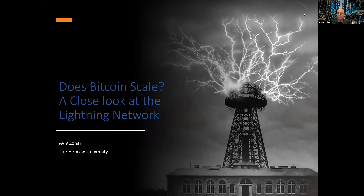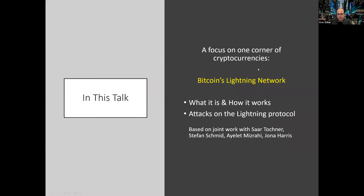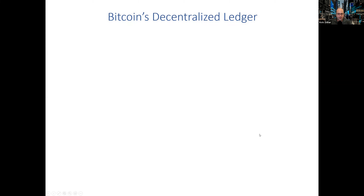Thanks. What I'd like to do is tell you about the Lightning Network, which is basically a protocol running on top of Bitcoin. I'm going to explain how it works and then describe a series of attacks we explored in different papers on this protocol. This is based on joint work with Saar Tochner, Stefan Schmidt, Ayelet Mizrahi, and Jonah Harris. If you have any questions, just interrupt me — I'm not reading the chat, so open your mic and ask.